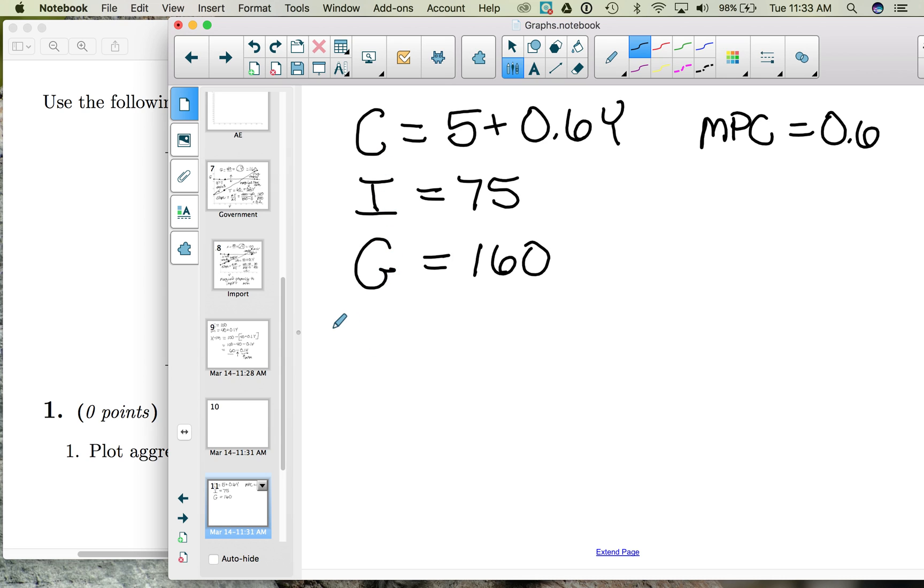So it's C and I and G, and then we found X minus IM. Our net exports formula was 60 minus 0.1Y. From there we found that we have an MPM of 0.1. That is, for every dollar of income, 10 cents goes to import spending, and since import spending is money leaving the country, it's a leakage. That's why we have this negative here.